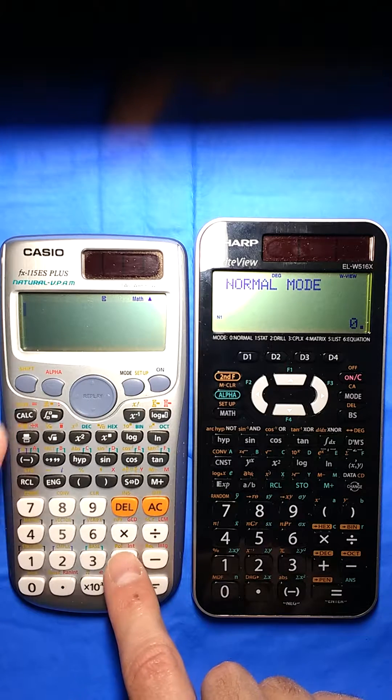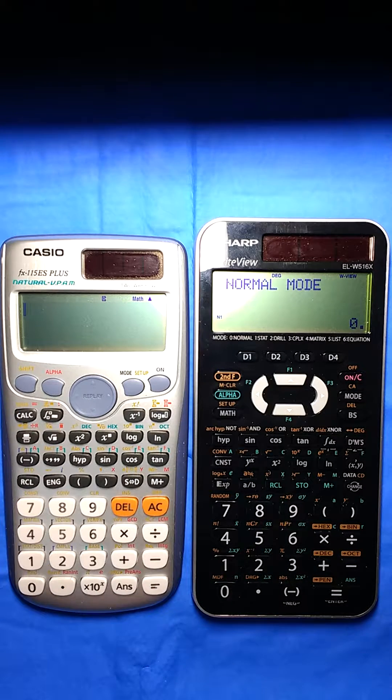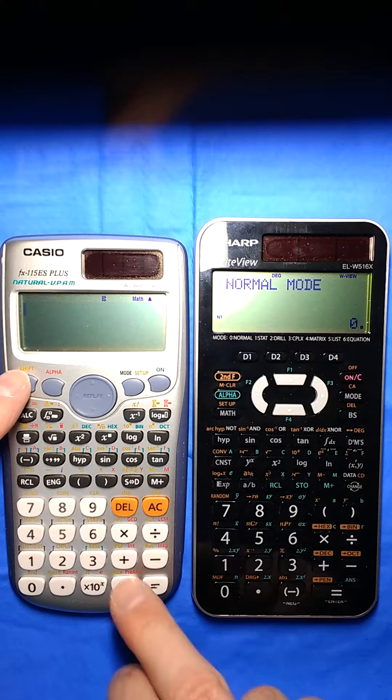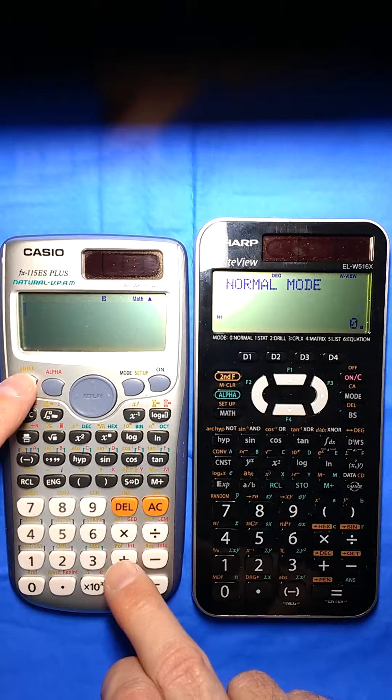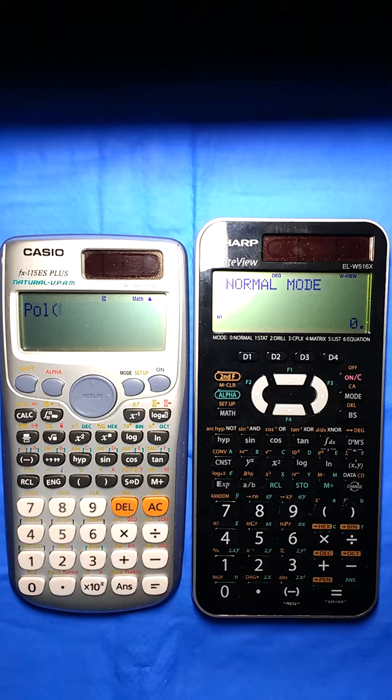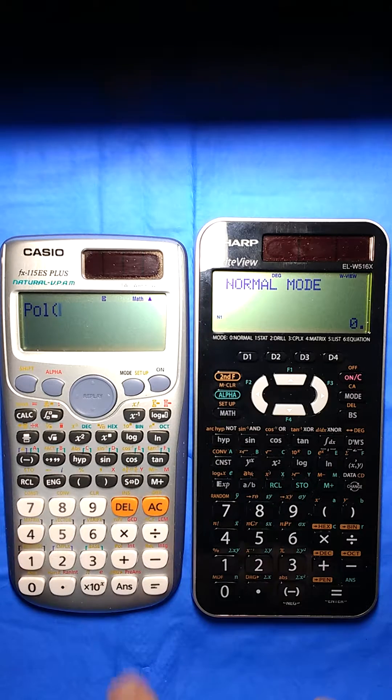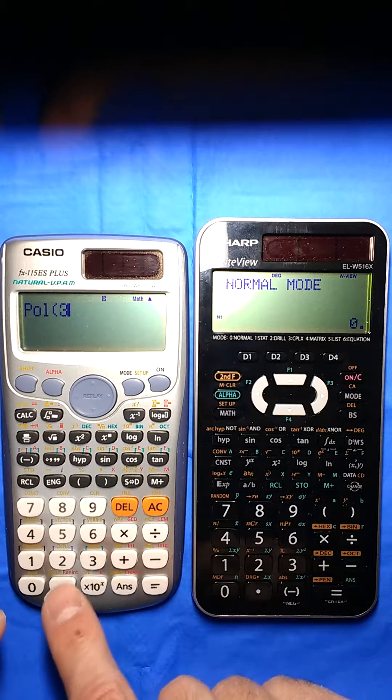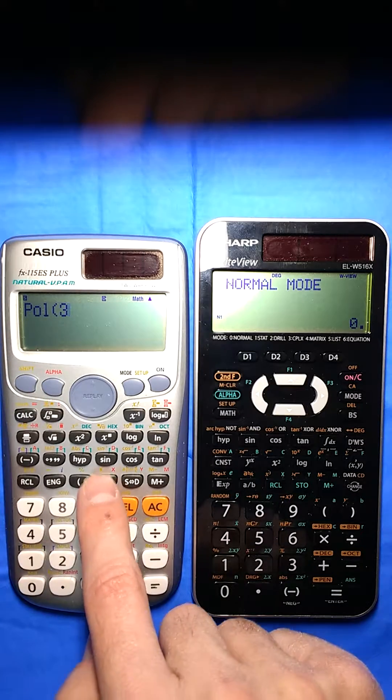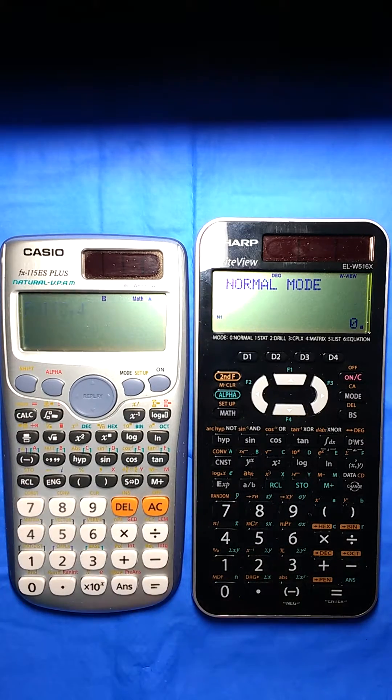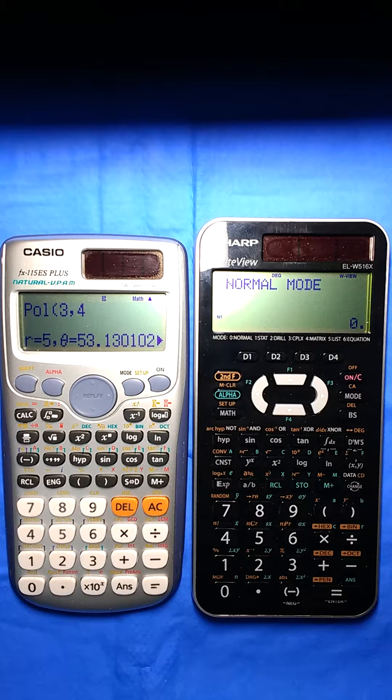Let's say we want to do a conversion from rectangular to polar. On the Casio it's a little different logic, but you say I want to polarize. So I want the polar coordinates from the rectangular coordinate of 3, and then I hit shift comma 4. Then I hit equal and there you go. The polar coordinates of 3 comma 4 would be 5, radius of 5 and an angle of 53 degrees.